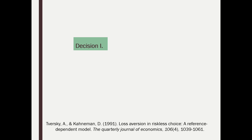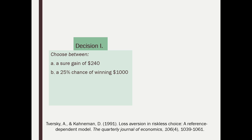This is an old classic study by Tversky and Kahneman. In Decision One, participants choose between a sure gain of $240 or a gamble: 25% chance of winning $1,000 and 75% chance of winning nothing. Like on Cash Cab, where contestants can take their winnings or risk them on a video question, most people take the sure gain — because they know there's a chance they'll lose what they've acquired.